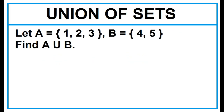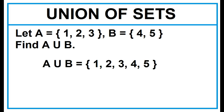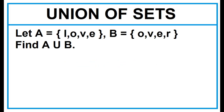Another example: Given Set A and Set B, find A Union B. A Union B is a set containing the elements 1, 2, 3, 4, 5.